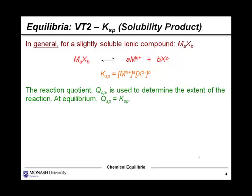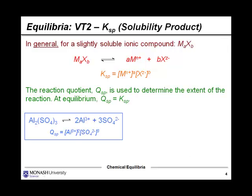We talked about reaction quotient in the previous video tutorial. In this case, we talk about QSP. This is used to determine the extent of the reaction. We know that at equilibrium, Q equals K. Let's have a look at this example here. Here we've got aluminum sulfate, and you can see that it's in equilibrium with those two ions, aluminum 3+ and sulfate 2-. You can see how the coefficients in that balanced equation manifest in the reaction quotient expression.